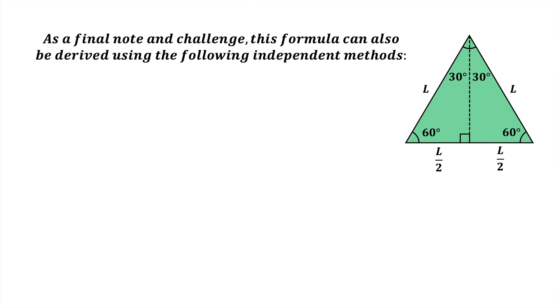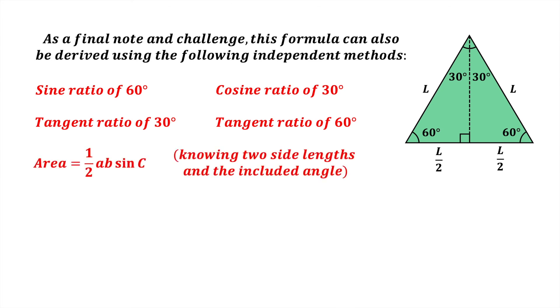As a final note and challenge, this formula can also be derived using the following independent methods: the sine ratio of 60 degrees, the cosine ratio of 30 degrees, the tangent ratio of 30 degrees, the tangent ratio of 60 degrees, the formula area equals half ab sin c where two side lengths and the included angle are known, as is the case for an equilateral triangle.